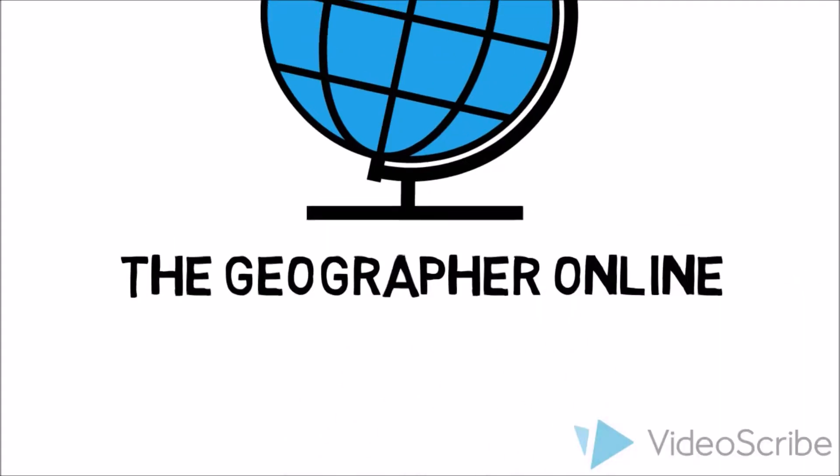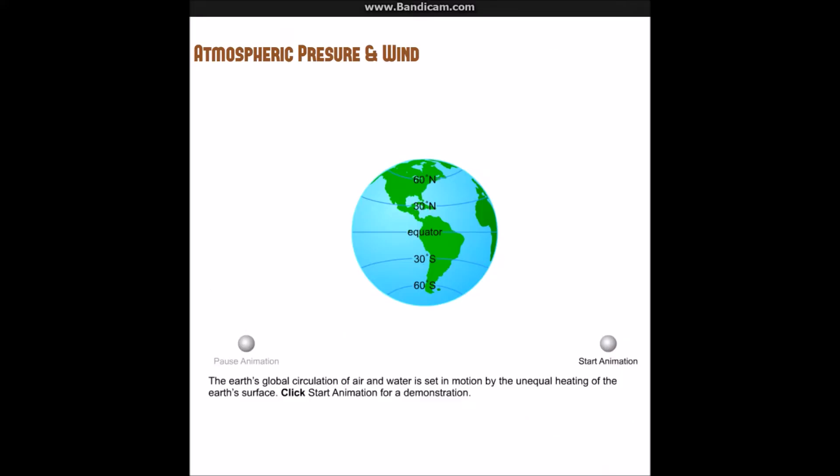Now normally I start these videos with a hand-drawn diagram explaining the formation of some geographical feature. This time however I'm going to be showing you a short animation that you can find on my website. It shows it in 3D and then I will go on to show you the hand-drawn version.